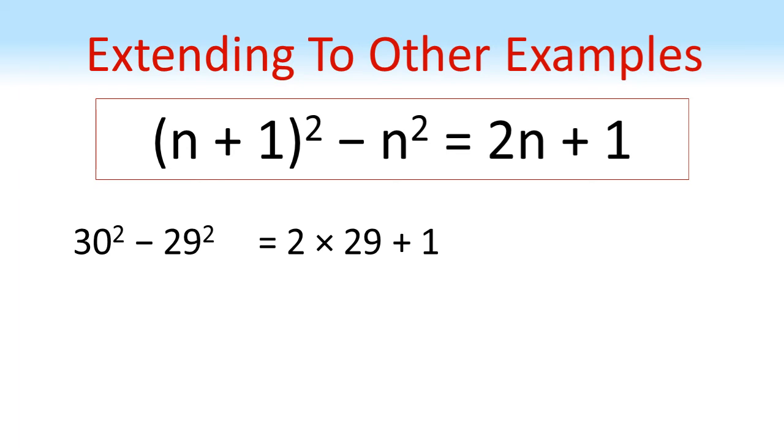The answer will be 2 times 29 plus 1, which is 58 plus 1, giving us an answer of 59. Again, we haven't needed to square the two separate numbers to find the answer. We can just stick it into our formula.